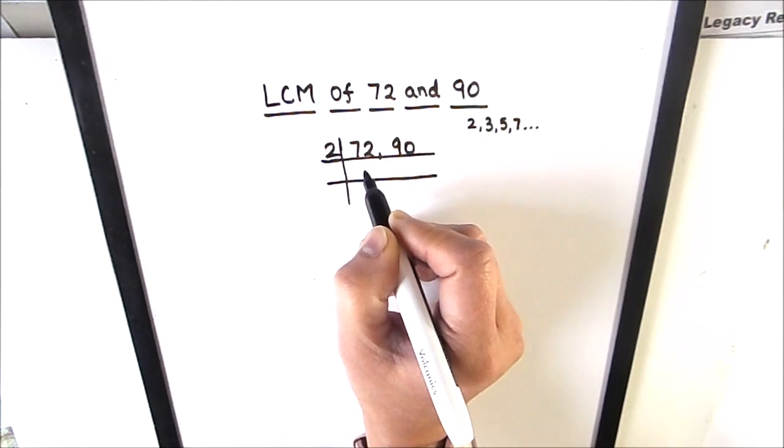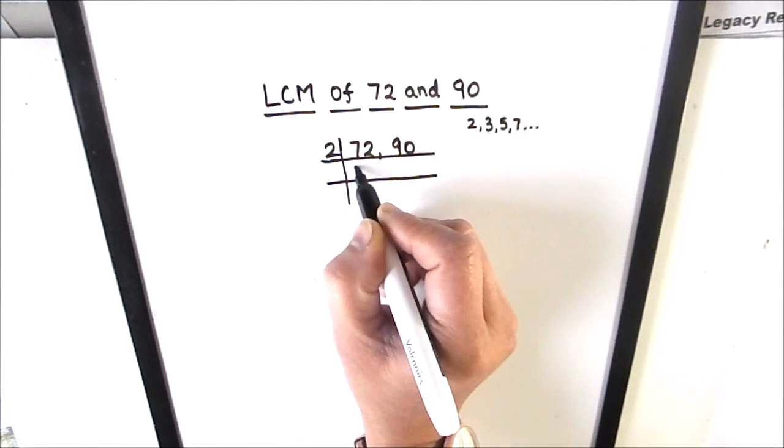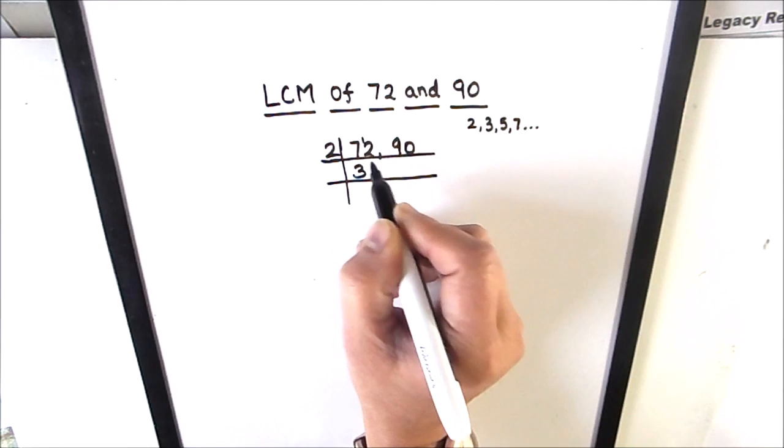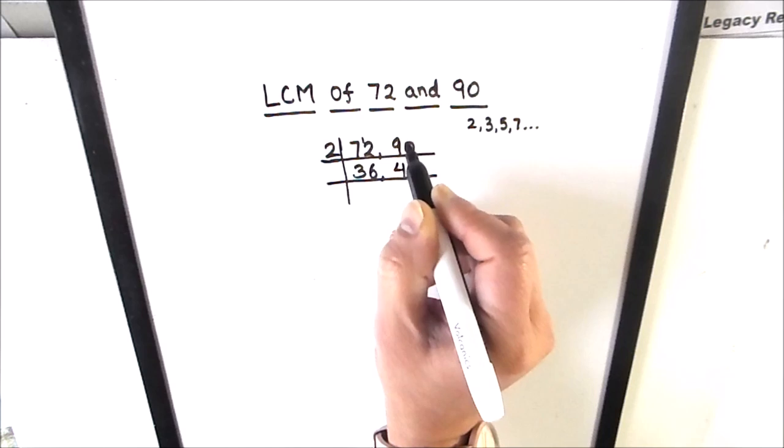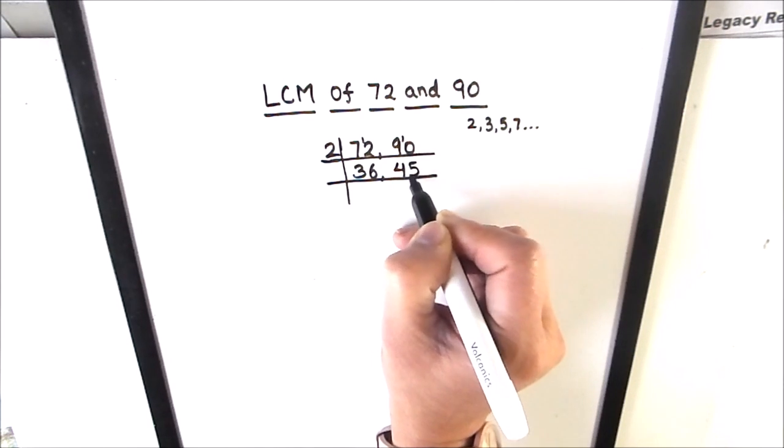2 times 36 is 72, 2 times 45 is 90. Again we'll use 2 to divide 36: 2 times 18 is 36, 2 times 5 is 10.